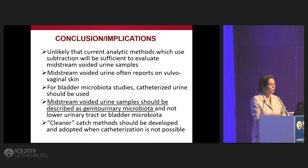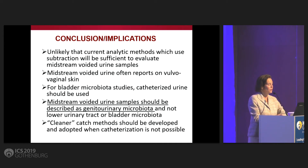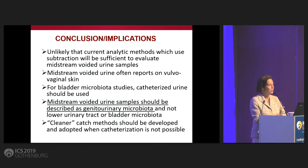This is unfortunate because we were hoping that if we could get a voided sample and a periurethral swab we could infer the presence of microbes in the bladder, but it looks like we won't be able to do that. Midstream voided urine often reports on vulvovaginal skin flora, which may be misleading for diagnostic purposes, especially when perineal hygiene is lacking. For perineal microbiota studies, catheterized urine should still be used. We feel strongly that midstream urine samples should be described as genitourinary microbiota, not lower urinary tract or bladder microbiota, and cleaner catch methods should be developed.